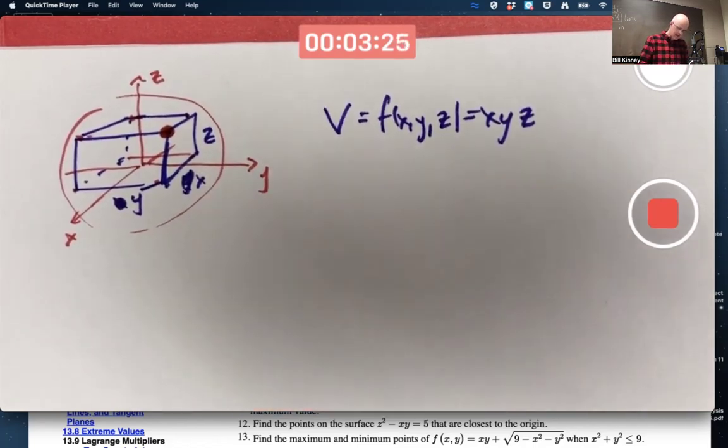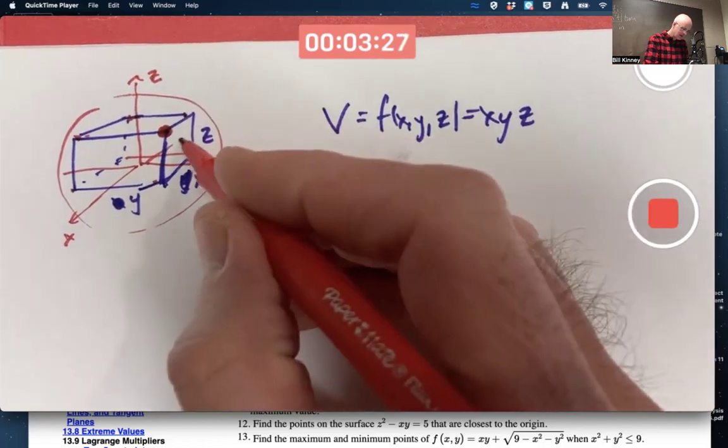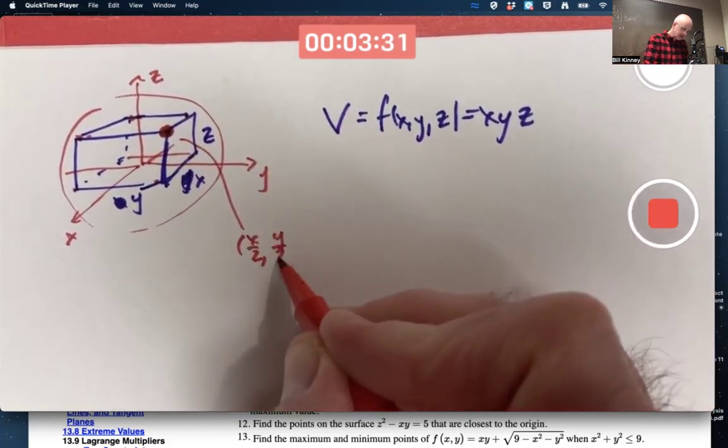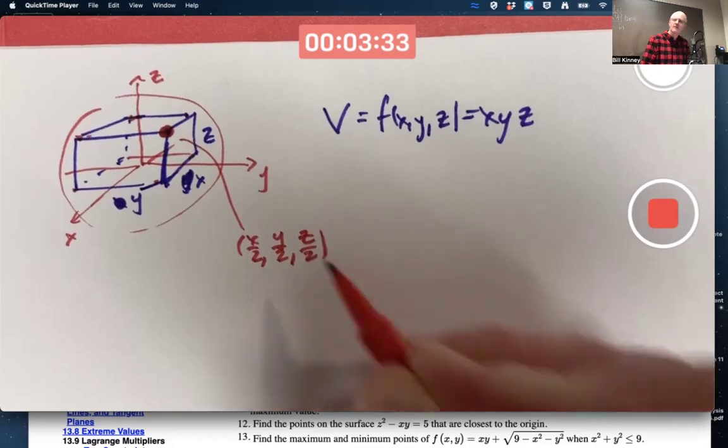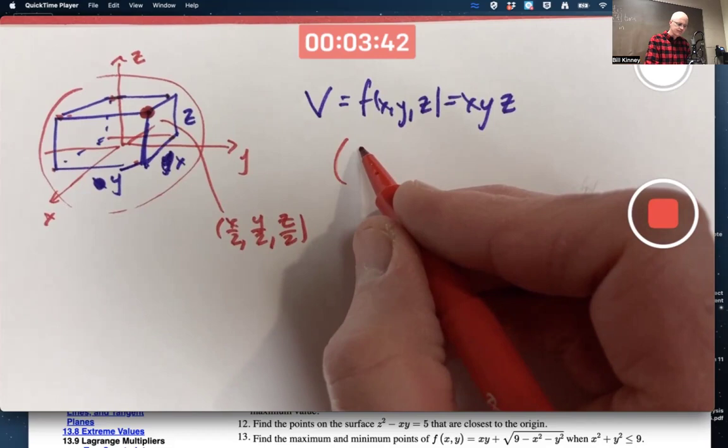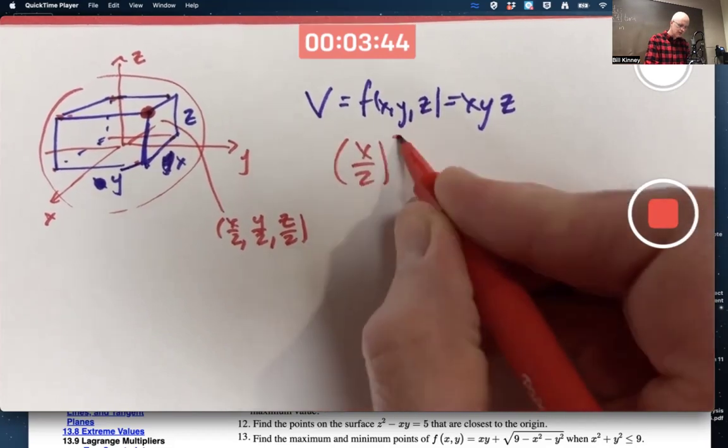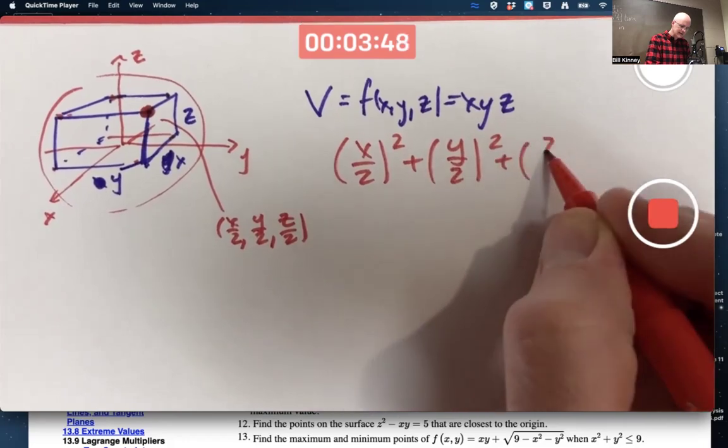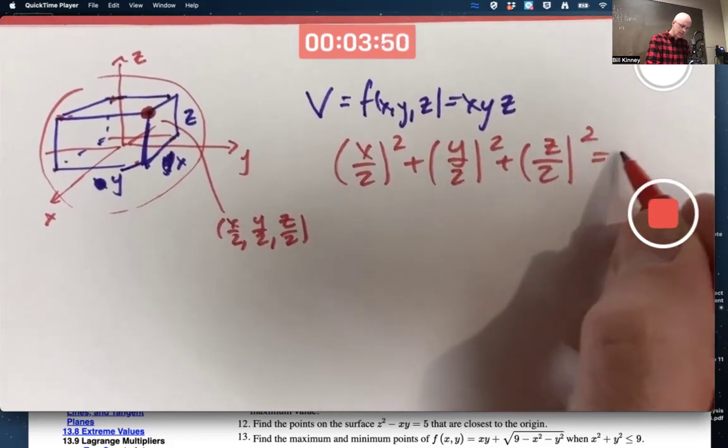The coordinates there would be X over 2, Y over 2, Z over 2. And they'd have to satisfy the equation of the unit circle. X over 2 squared plus Y over 2 squared plus Z over 2 squared equals 1 squared.